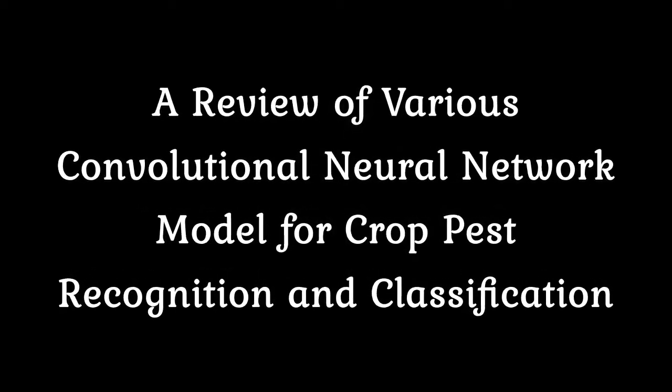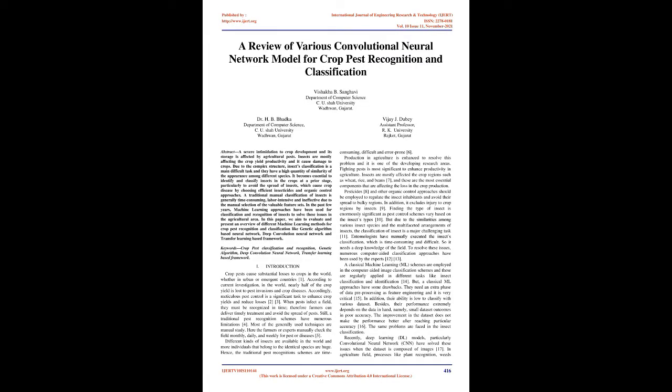A review of various convolutional neural network models for crop pest recognition and classification. Agricultural pests are a severe threat to crop development and storage. Insects mostly affect crop yield productivity, causing damage due to their complex structures. Classification is a difficult task given the high similarity of appearance among different species. This paper evaluates machine learning methods including genetic algorithm-based neural networks, deep convolutional neural networks, and transfer learning frameworks.